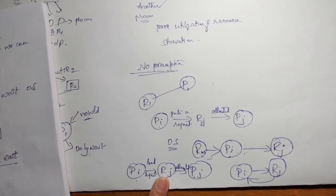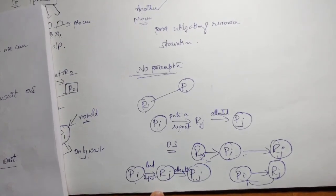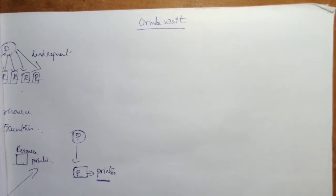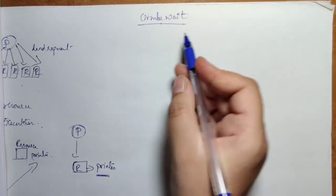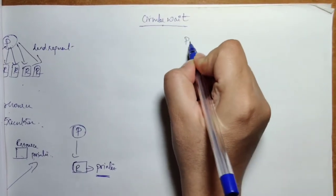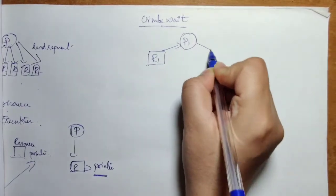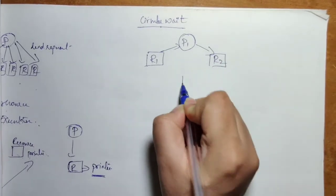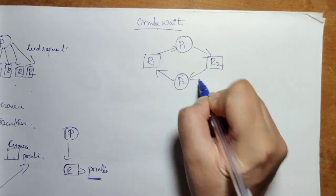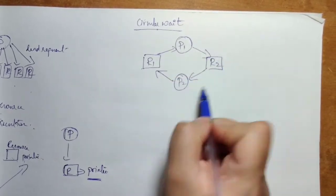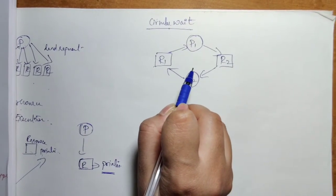The next concept is circular wait. How can we eliminate circular wait to avoid deadlock? In circular wait, P1 holds resource R1 but waits for R2, while P2 holds R2 but waits for R1 — creating a cycle. To solve this, the operating system uses a mapping function.